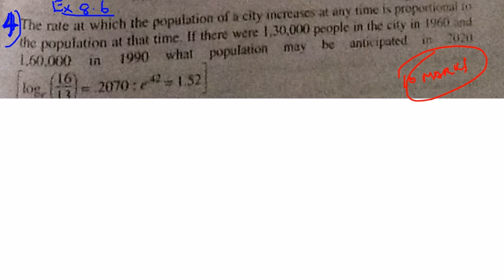If I assume that A is the population of the city at any time T, then I can write dA by dt, that is the rate at which the population is increasing, is proportional to the population that is present at that time.